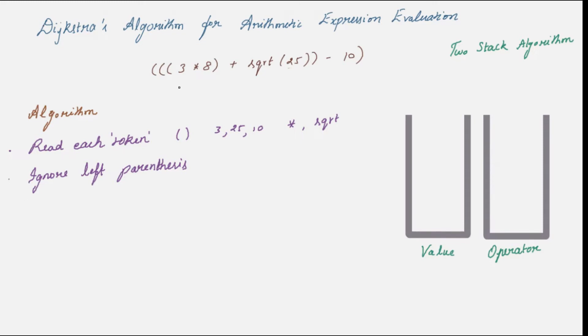If the token is a numerical value just push it into the value stack. Similarly if it's an operator push it into the operator stack. Next is the most important step. What you have to do when you encounter a right parenthesis.